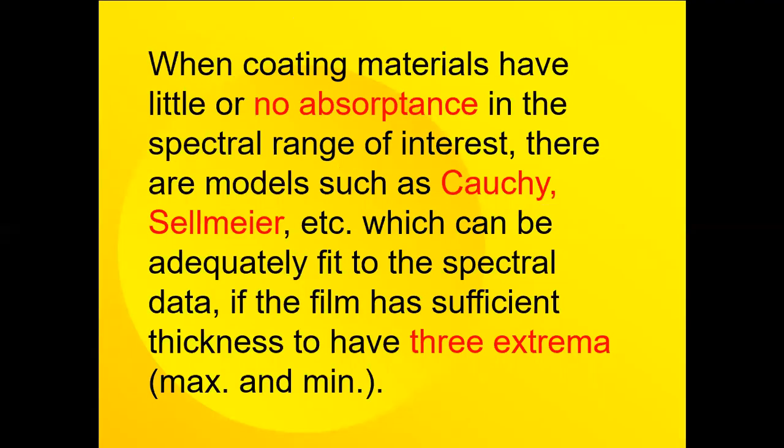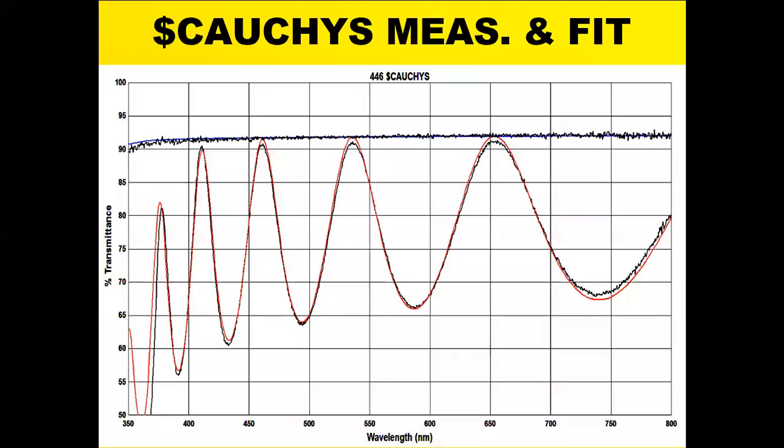When coating materials have little or no absorbance in the spectral range of interest, there are models such as Cauchy and Sellmeier which can be adequately fit to the spectral data if the film has sufficient thickness to have at least three extrema in the spectral range. This one, of course, has over half a dozen extrema.